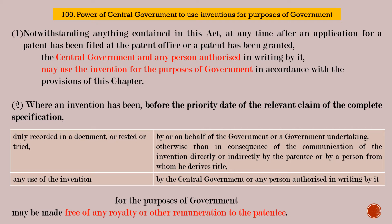Section 100: Power of Central Government to Use Inventions for Purposes of Government — a very important chapter under Indian Patents Act. Subsection 1: Notwithstanding anything contained in this act, at any time after an application for a patent has been filed at the patent office, or a patent has been granted — that is, before or after grant of patent, whether in the application stage or the grant stage — the central government and any other authorized person in writing may use the invention for the purpose of government in accordance with the provisions of this chapter.